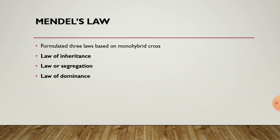Mendel concluded that unit factors exist in pairs, and they are paternal and maternal in origin because both parents make equal contribution to the development of character in the progeny. For example, capital T stands for tall and small t stands for dwarf. The alleles capital T and capital T are denoted as homozygous. Small t and small t, or capital T and small t, are denoted as heterozygous.